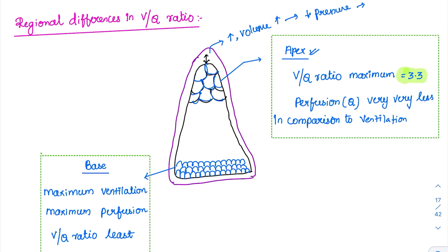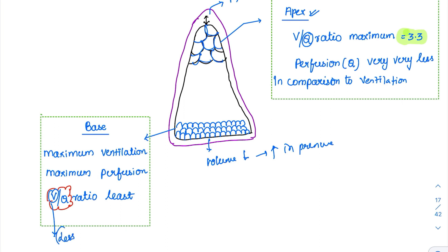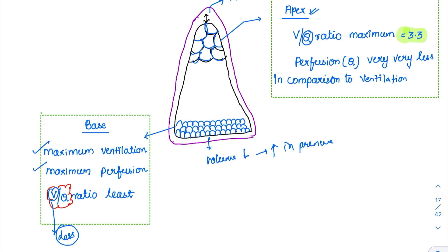The reason the V/Q ratio is high at the apex is that perfusion is less compared to ventilation. When the denominator (quantity of blood flow) is less and ventilation is more, the ratio becomes very high. At the base, when standing, there is a volume decrease leading to pressure increase. With increased pressure, there is not much negative force, so the V/Q ratio is least at the base. Both maximum ventilation and maximum perfusion are present at the base due to the large amount of lung tissue, but the ratio is still least.